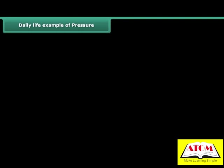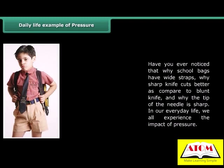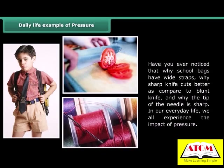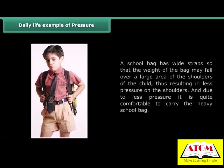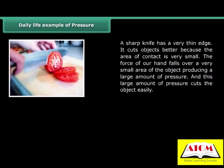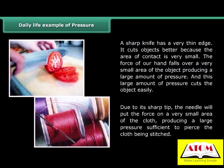Daily life examples of pressure: Why do school bags have wide straps? Why does a sharp knife cut better than a blunt knife? Why is the tip of a needle sharp? A school bag has wide straps so the weight of the bag falls over a large area of the shoulders, resulting in less pressure and making it comfortable to carry. A sharp knife has a very thin edge, so the force falls over a very small area, producing large pressure that cuts the object easily. Similarly, the sharp tip of a needle puts force on a very small area of cloth, producing enough pressure to pierce it.